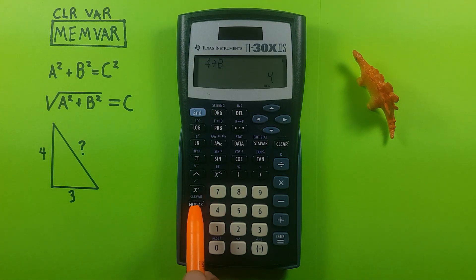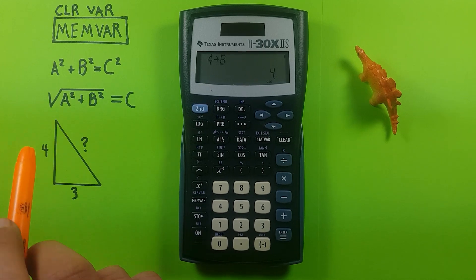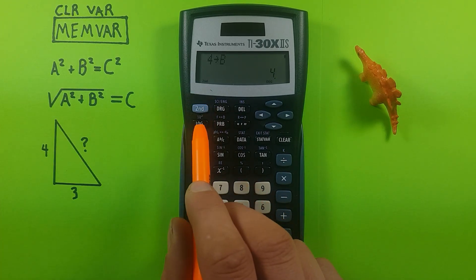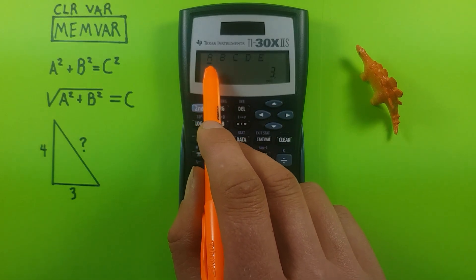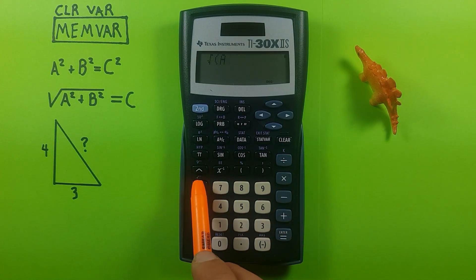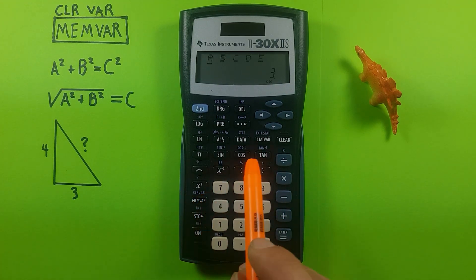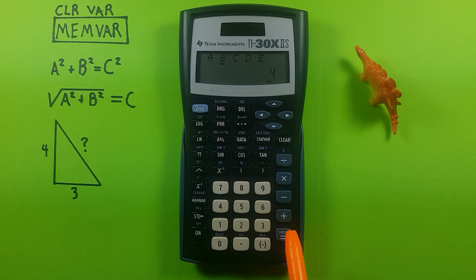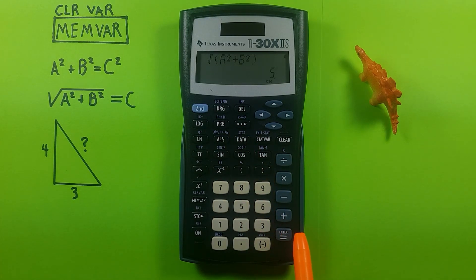We can use the memvar key for this. To enter our formula, we start with the square root, then memvar and A squared — there's our A — enter, squared. Plus memvar B squared — there's our B squared. Close the bracket and press equals. This gives us 5, which is the length of our C side.